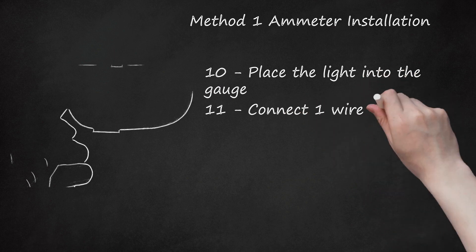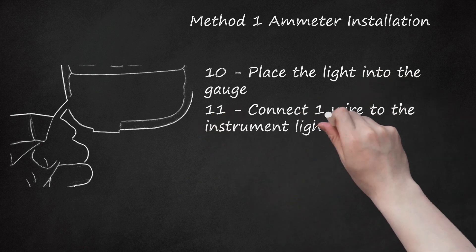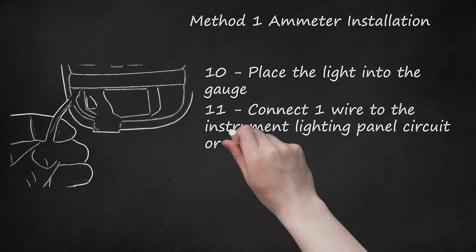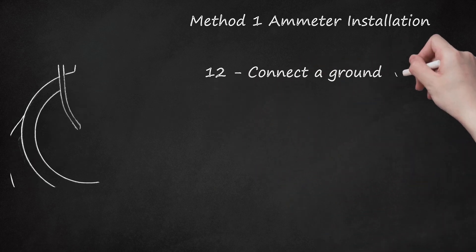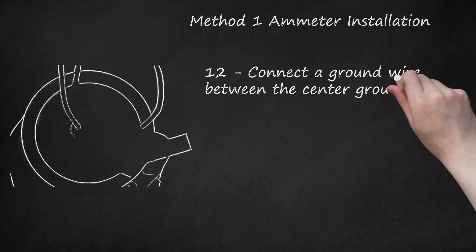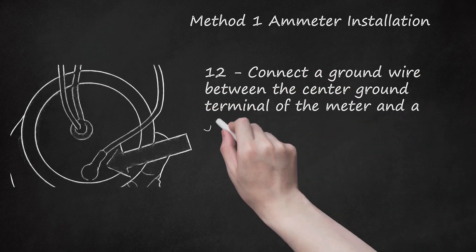Step 11: Connect one wire to the instrument lighting panel circuit or other 12-volt source. Step 12: Connect a ground wire between the center ground terminal of the meter and a good engine ground.